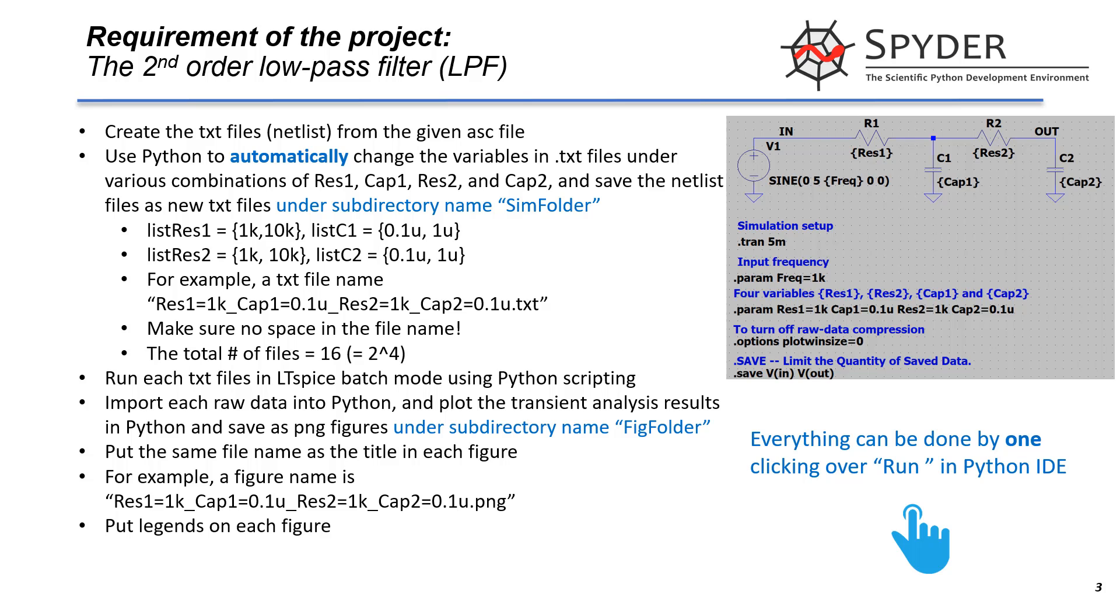Here is a detailed project requirement. It is a second-order low-pass filter that we have learned before. But in this case, we are gonna step over four different variables: resistor 1 and 2, and capacitor 1 and 2.